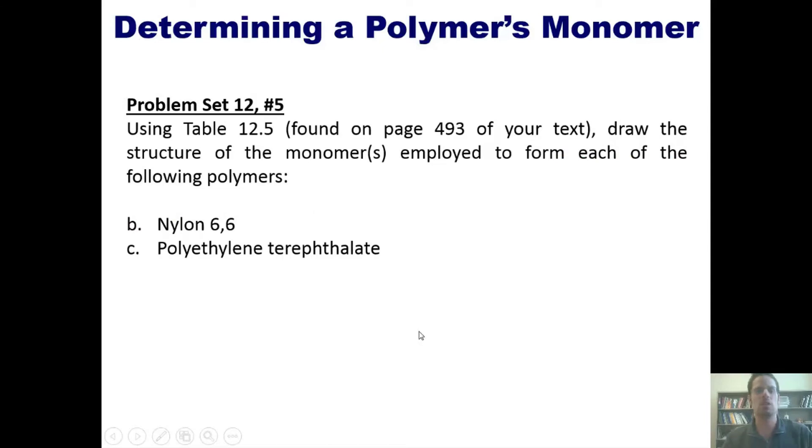That takes us to a question. Using table 12.5, which I showed you a few slides ago and is also found on page 493 of your text, draw the structure of the monomers employed to form each of the following polymers. Now, I'm not going to show you the answer to this question here, but we'll post a link to a separate video in which I do. That takes us to the end of this video and the end of our discussion of Chapter 12 and the end of our first semester of General Chemistry. I hope it's been enjoyable for you. Until next semester and next time, have an enjoyable rest of your life and day.